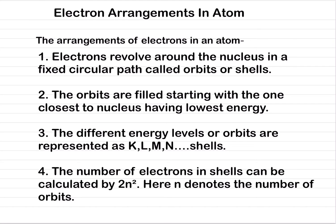Number 2 — the orbits are filled starting with the one closest to the nucleus, which has the lowest energy. The one furthest from the nucleus will have higher energy. Number 3 — the different energy levels or orbits are represented as capital letters K, L, M, N, O, P, etc.